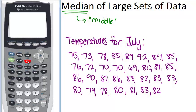Go into the stat menu and edit so that you can see all of your lists. If any of your lists are filled, you want to clear those out first. We're just going to use one list and input all of our temperatures.